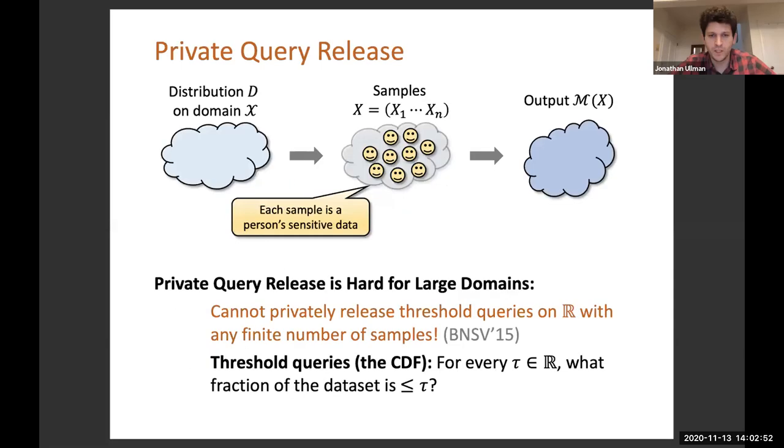This is a very simple family of queries that assumes everyone's data is just a real number. You want to estimate for every threshold tau, what is the fraction of people whose number is smaller than tau. It's equivalent to computing the CDF of the distribution.